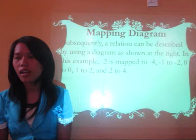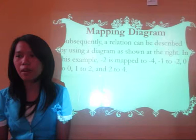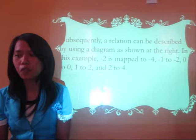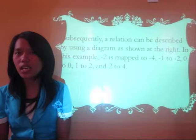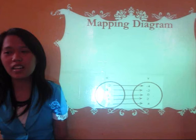Next is the mapping diagram. A relation can be described by using a diagram as shown at the right. In this example, negative 2 is mapped to negative 4, negative 1 to negative 2, 0 to 0, and 1 to 3. This is an example of a mapping diagram.